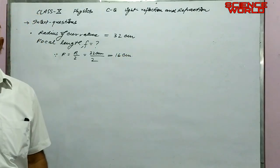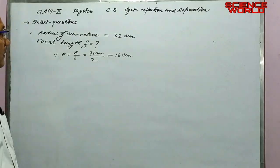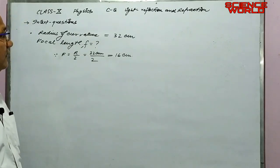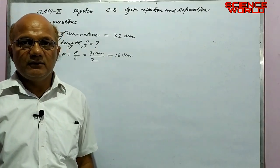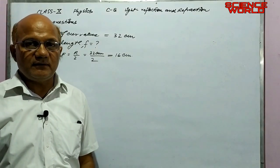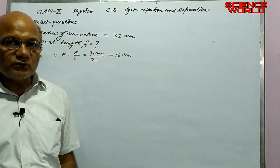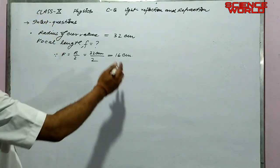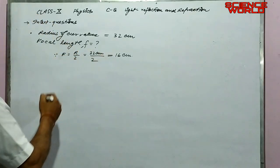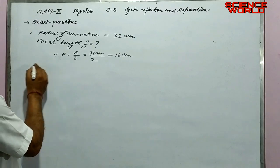To repeat the question: find the focal length of a convex mirror whose radius of curvature is 32 centimeters. The solution gives a focal length of 16 centimeters.